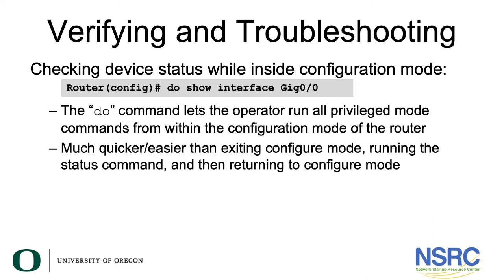You can check the device status while inside configuration mode as well. You can do so by simply typing 'do show interface' followed by the interface name — in this case, GigabitEthernet 0/0. The 'do' command lets the operator run all privileged mode commands from within configuration mode, which is much quicker and easier than exiting configuration mode, running the status command, and then returning to configuration mode.